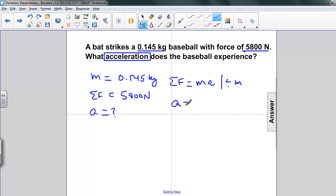And as we got in the last example, number 9, we had A equals the net force divided by the mass. So we substitute all the quantities in here: 5,800 newtons for the force and 0.145 kilograms for the mass.